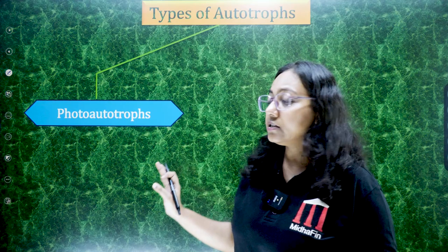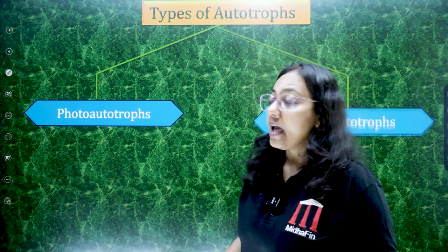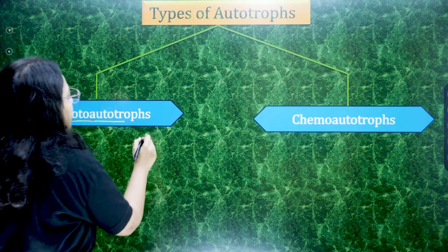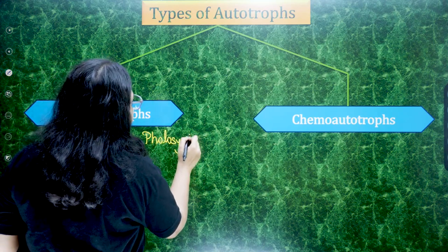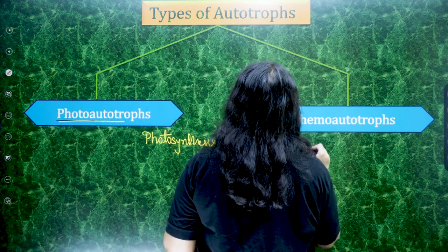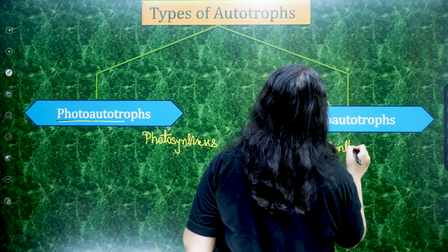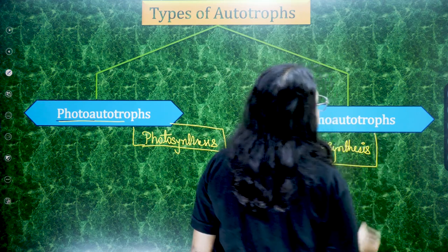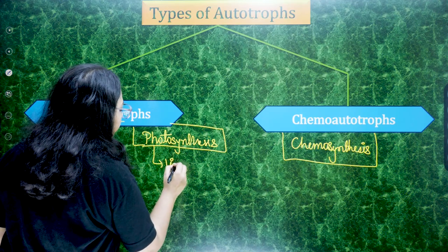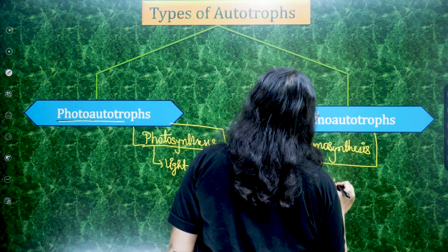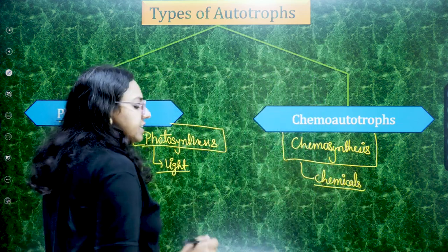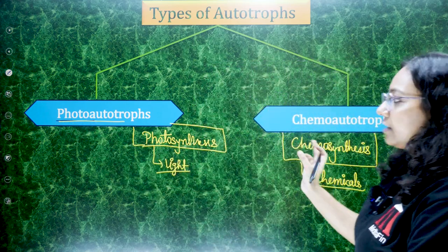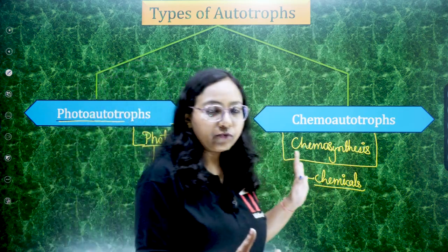The first type, which is very familiar to us, is photo autotrophs — also called photosynthesis. The second is chemo autotrophs — also called chemosynthesis. Photo means light, and chemo means chemicals. Only one word is different between the two. These are two different types of autotrophic mode of nutrition — both are autotrophic, but they are different from each other.